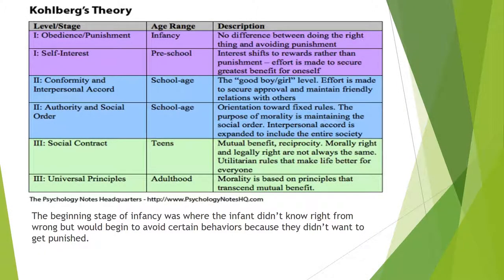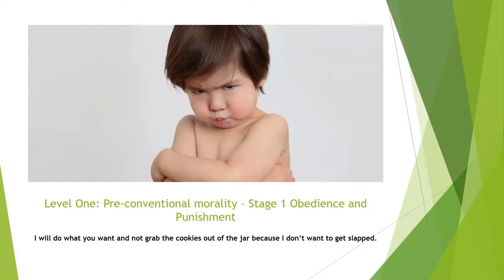In these six stages, Kohlberg explains the differences between the level or stage, the age range, and gives a description. The beginning stage of infancy was where the infant didn't know right from wrong, but would begin to avoid certain behaviors because they didn't want to get punished. This is Level 1, pre-conventional morality, Stage 1: obedience and punishment. "I will do what you want and not grab the cookies out of the jar because I don't want to get slapped."